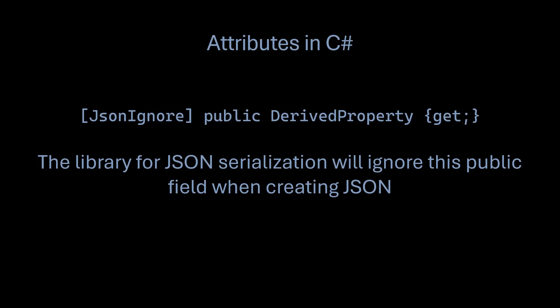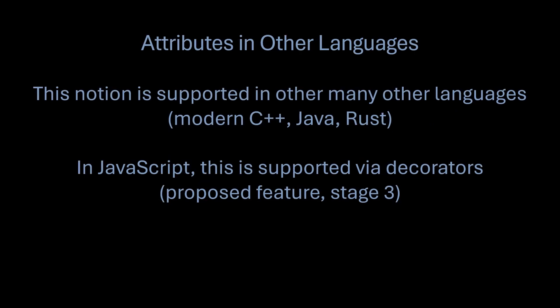Attributes are used quite a bit in C#, including things used underneath the hood to help the compiler. Attributes are essentially C# classes. This is mirrored in many other languages now — modern C++ supports it, Java has annotations, Rust has them. In JavaScript, this is even a feature called decorators, still a stage-three proposal, but very similar to how attributes work in C#.